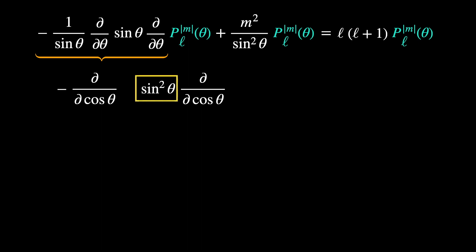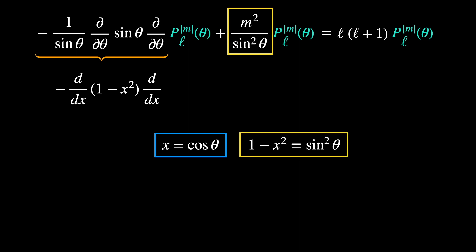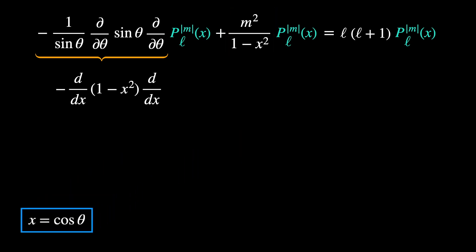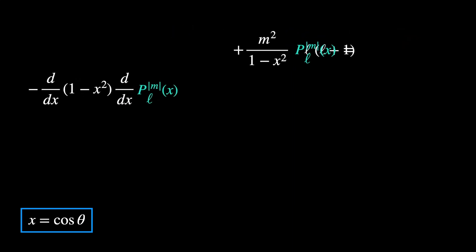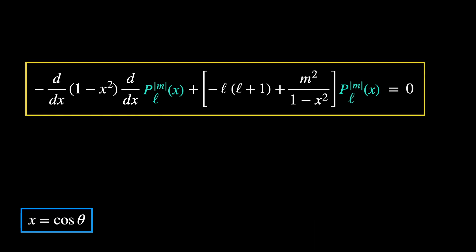Sin-square can be written as 1 minus cosine-square. Here we make a change of coordinates to x, defined by cosine theta. For the second term, we can write sin-square by 1 minus x-square. And we have reached an alternate form for the Legendre equation.